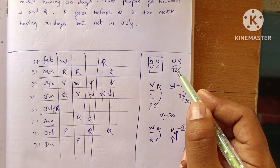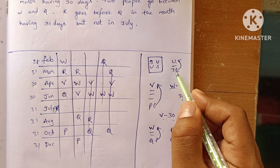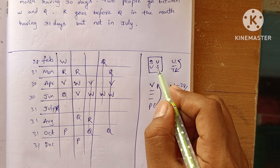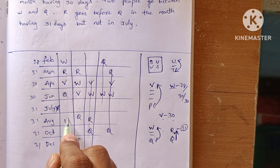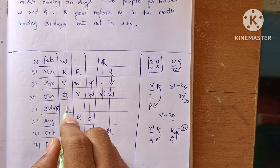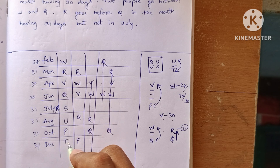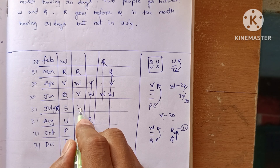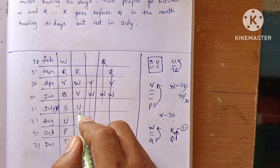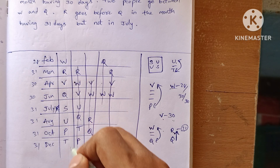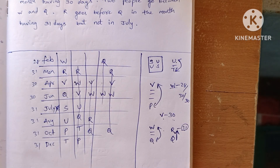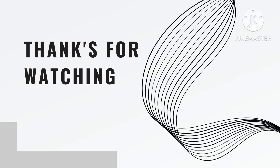Now checking U and T: one person goes between U and T, and S and U are immediate neighbors. Testing the remaining possibilities, one case fails because S cannot be placed correctly. The other case satisfies all conditions, giving us the final answer to the puzzle. Thanks for watching!